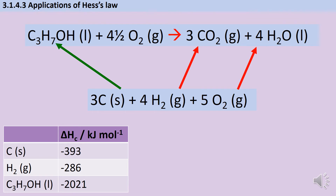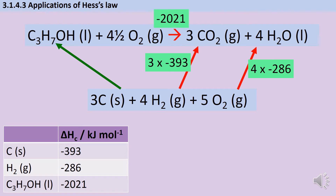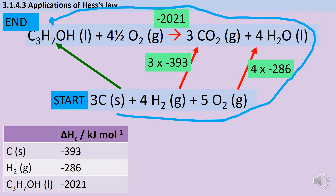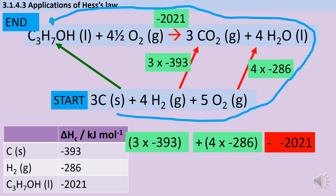Now I add numbers to the arrows. The combustion of carbon is minus 393, and since there are three moles of carbon being combusted, I multiply by three — this is the same value used earlier for the formation of carbon dioxide because it's the same process. Likewise, four lots of minus 286 for the four moles of water being formed. Finally, the combustion of propanol is minus 2021. I write 'start' and 'end', and I can see I'm going the correct way up the two combustion arrows — so they stay as they are — and the wrong way along the combustion of propanol arrow at the top, so that gets reversed: minus minus 2021. Adding all values gives a standard enthalpy of formation of propanol of minus 302 kJ/mol.